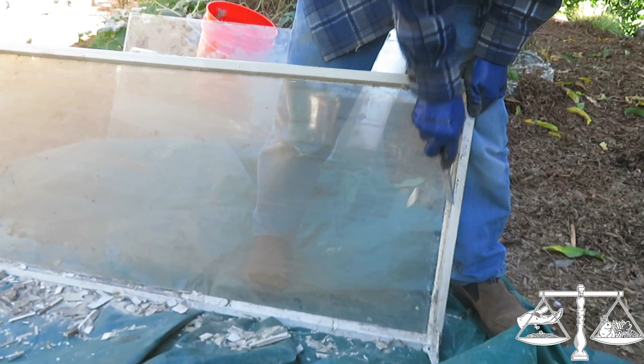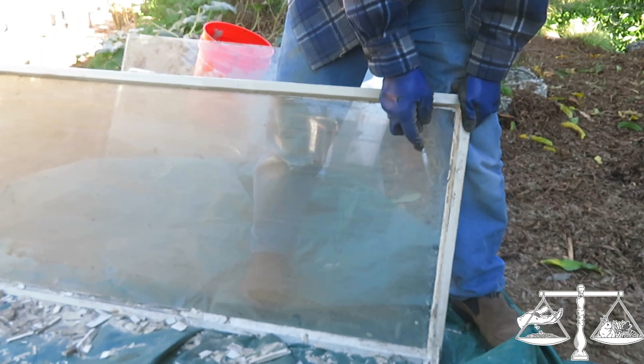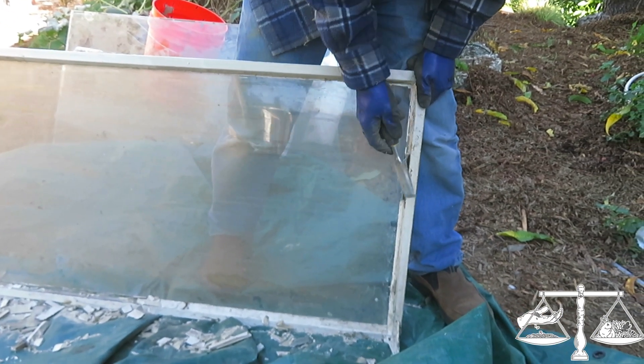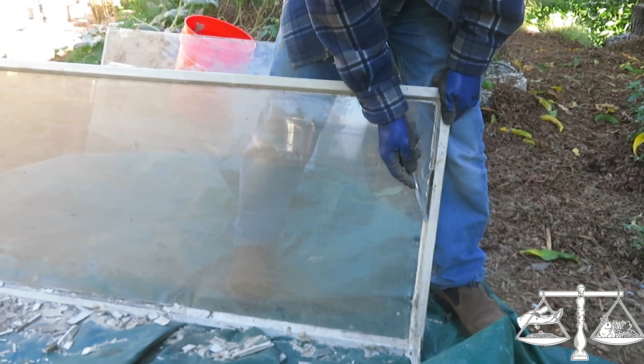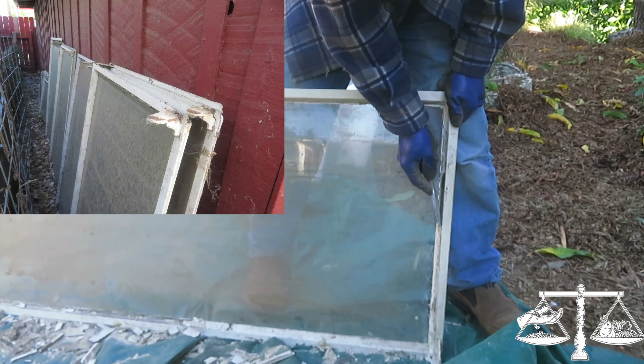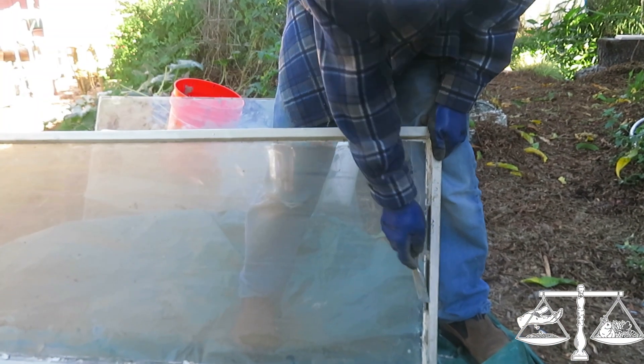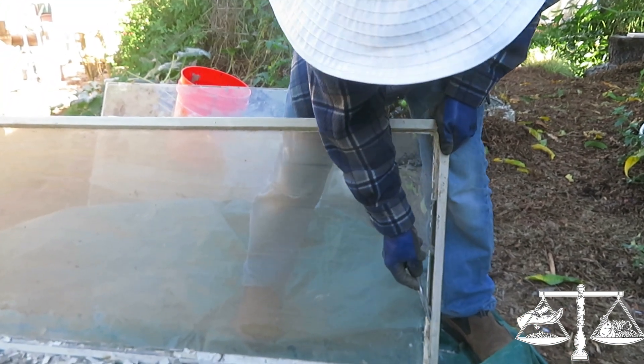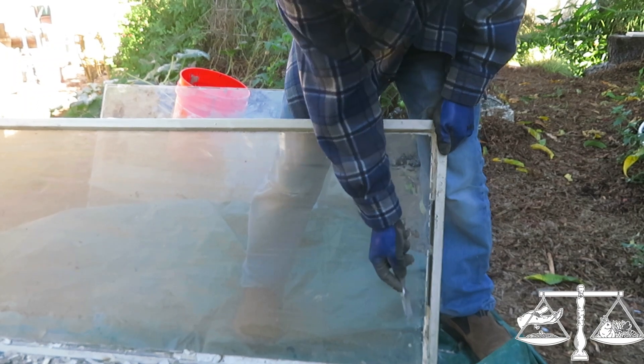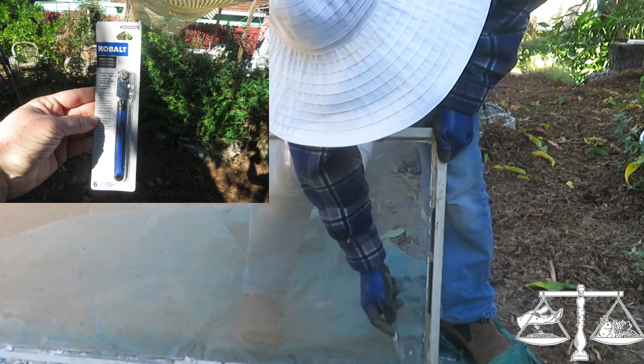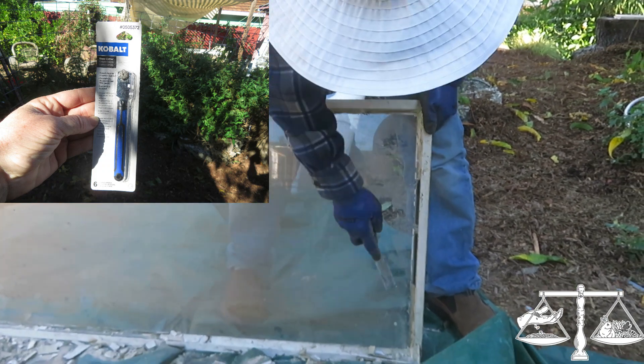So these are some old windows from my house when I got new windows several years ago. I saved them thinking that I was going to make a greenhouse and I didn't, so we're going to use it to make a brooder. I got a glass cutter to cut it out but he had a better idea.